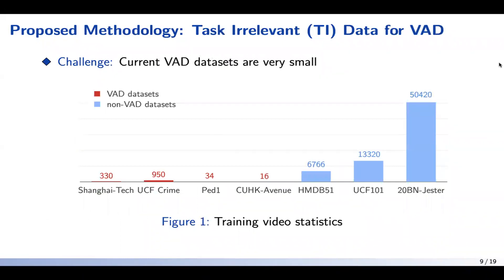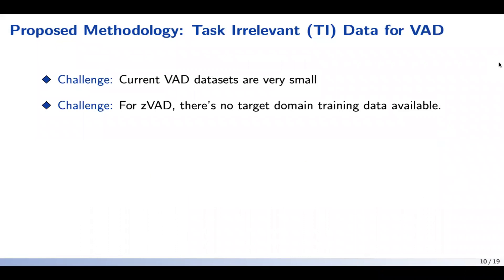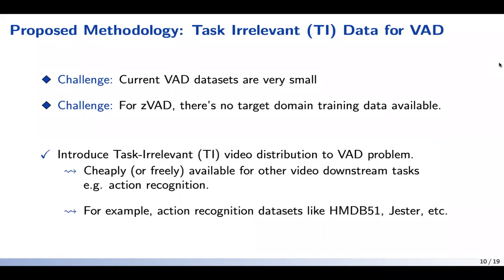Another issue with current VAD problems is the size of datasets. The current VAD datasets are extremely small compared to non-VAD datasets like HMDB51 and UCF101. This creates a huge problem in the zero-shot VAD setting where there is no target domain data available for the model to generalize. In order to tackle this scenario, we introduce task-relevant datasets to the VAD problem. These are cheaply or freely available videos from other video-based tasks like action recognition.